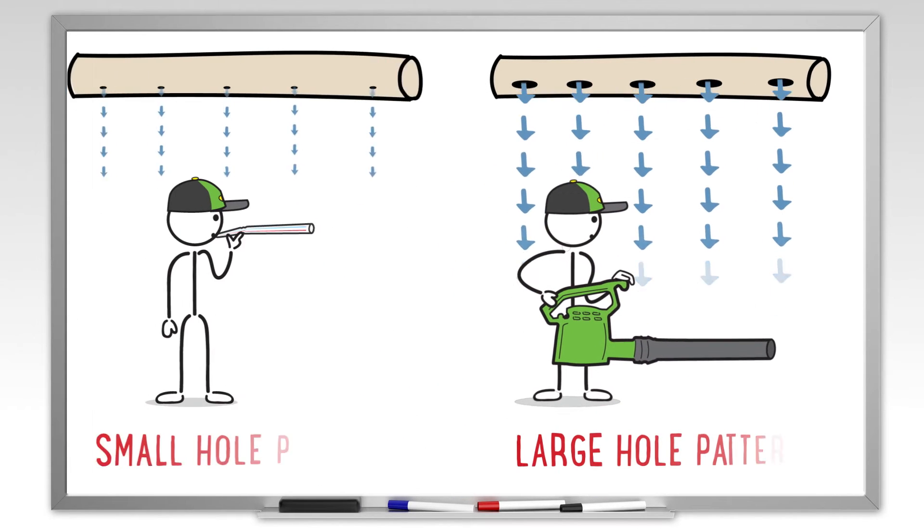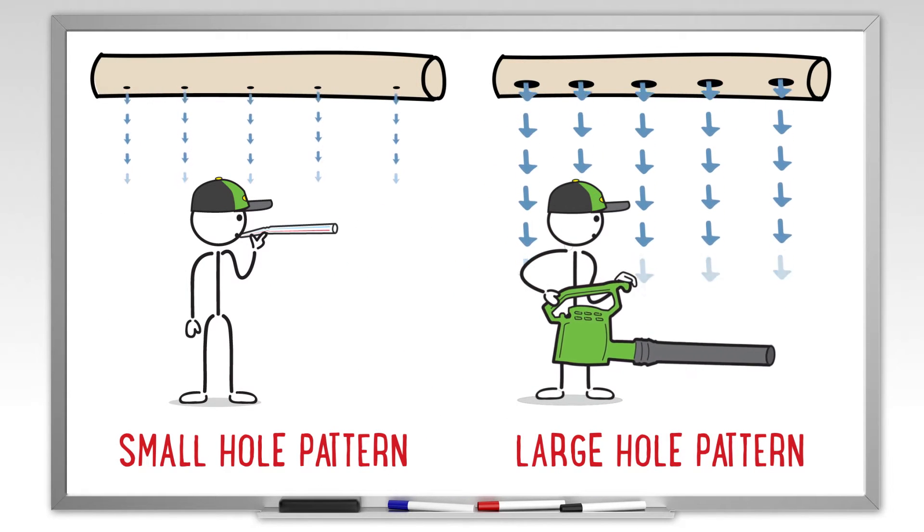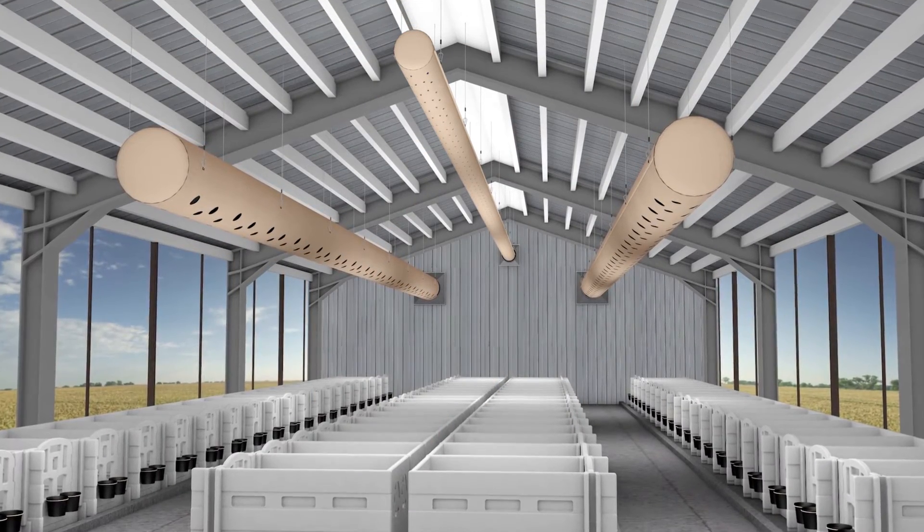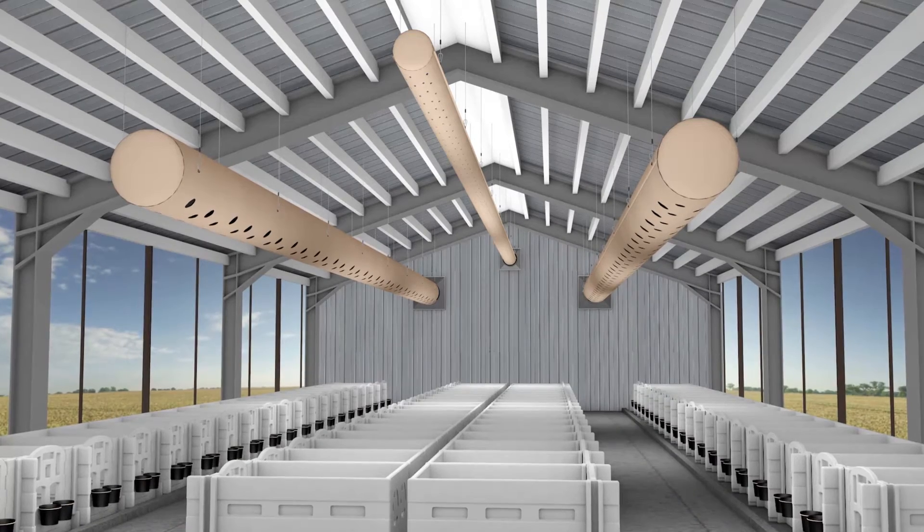Let's take these basic principles and apply them on the farm. Currently, all other calf barn ventilation systems offer only one hole pattern choice.